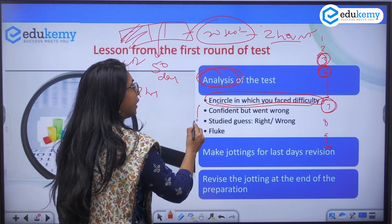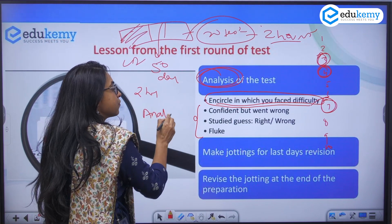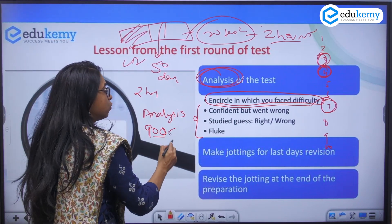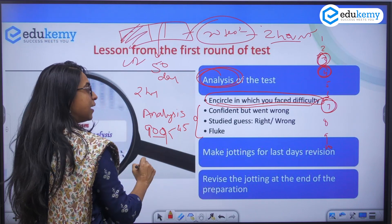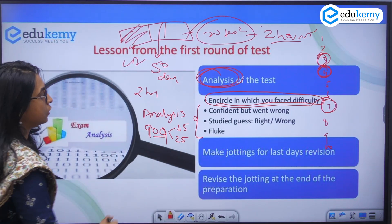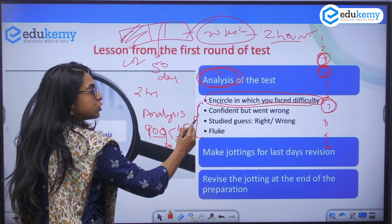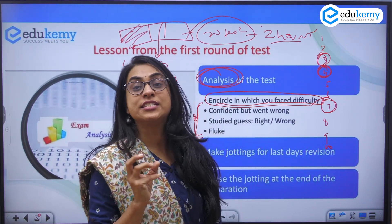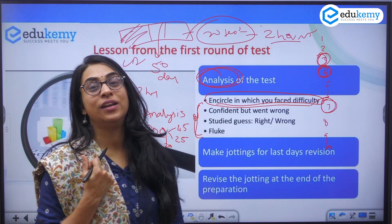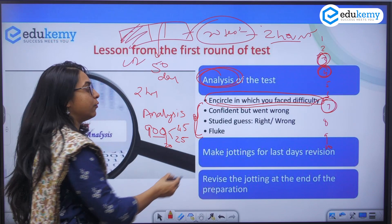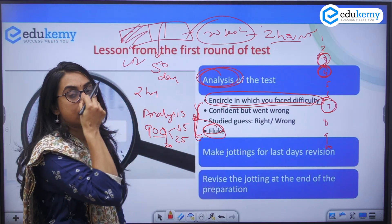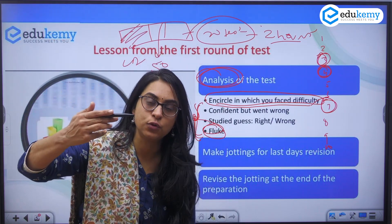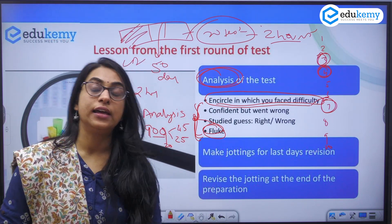When you analyze the test, suppose you did 90 questions — you were confident for 45, you had made a studied guess for 25, and 20 were your fluke area. Please analyze which confident questions went wrong, where your studied guess went right and what logic was correct, and what happened with the fluke answers. If you were confident on a question and it went wrong, try to analyze why. So categorize: confident questions, fluke questions, and studied guesses, then analyze accordingly.